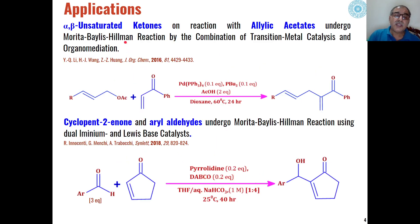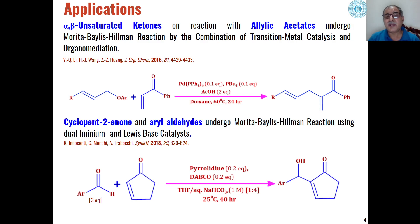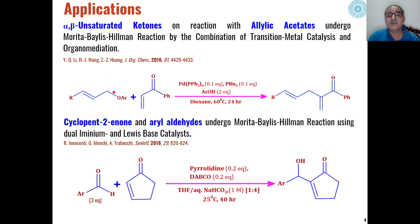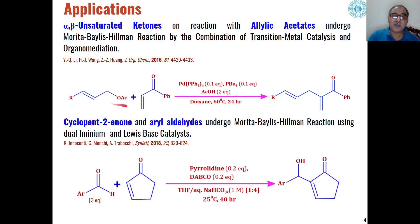There are many examples of this Baylis-Hillman reaction and in recent years many modified versions have been reported by different authors. For example, alpha-beta unsaturated ketones on reaction with allylic acetates.